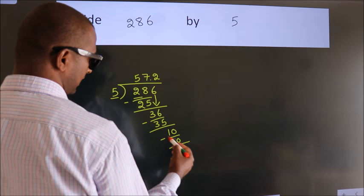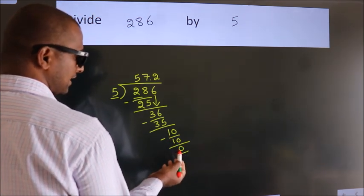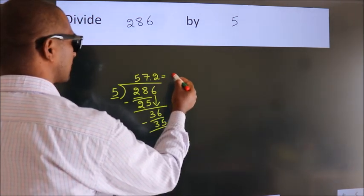Now we subtract. We get 0. We got remainder 0. So this is our quotient.